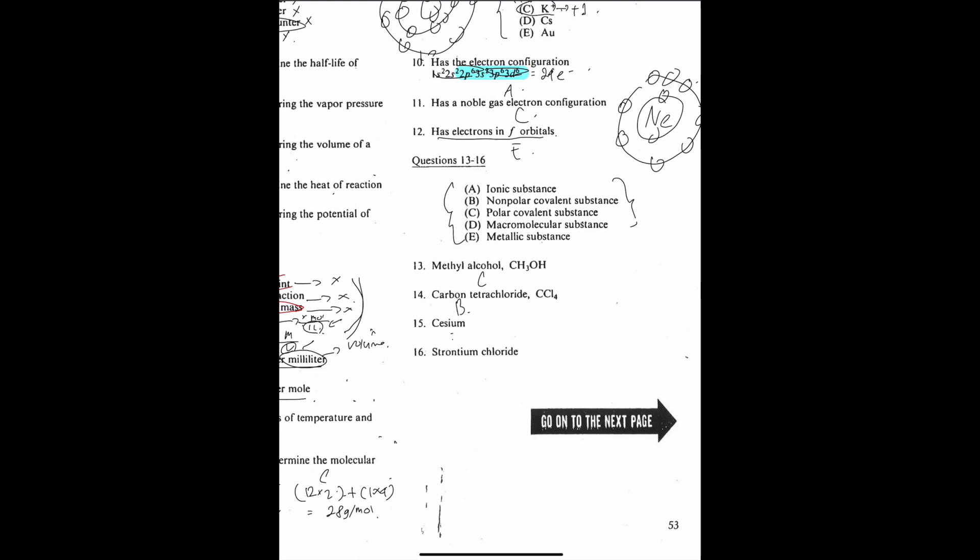Cesium. Cesium is an alkali metal. Alkali metal is basically a metallic substance that has all properties of a metal. So it should be that.